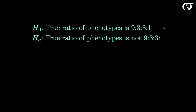We're going to test the null hypothesis that the true ratio of those four phenotypes is 9 to 3 to 3 to 1 — in other words, that those two genes are being inherited independently. The alternative hypothesis is simply that that is not the case: the true ratio is not 9 to 3 to 3 to 1, and those genes are not being inherited independently.